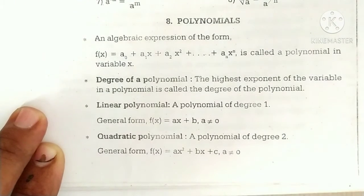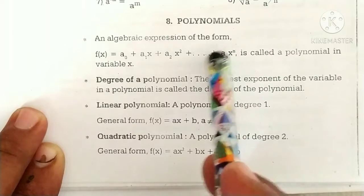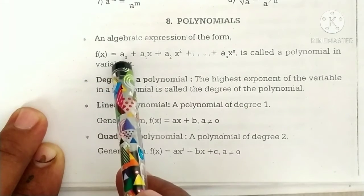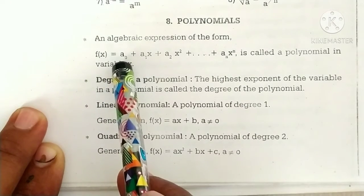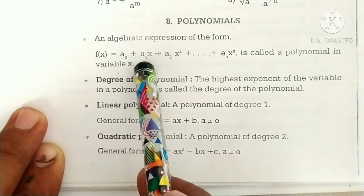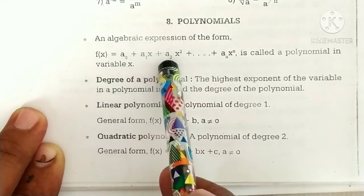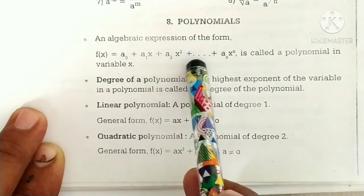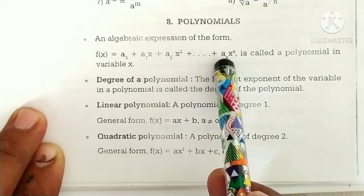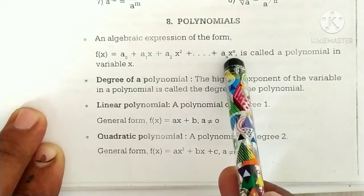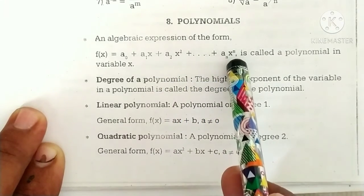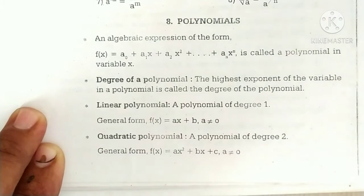Polynomials. An algebraic expression of the form f of x: a0 plus a1x plus a2x squared plus dash dash dash plus an x to the power of n is called a polynomial in variable x.